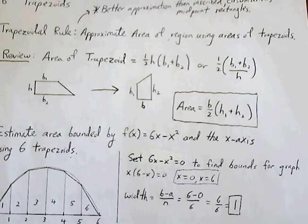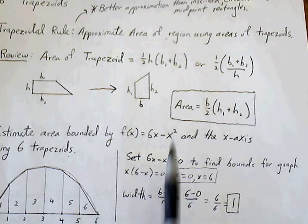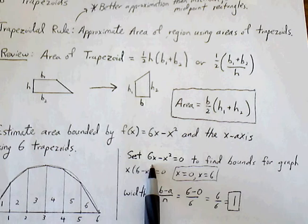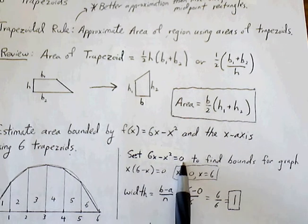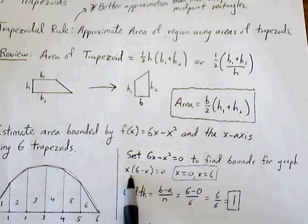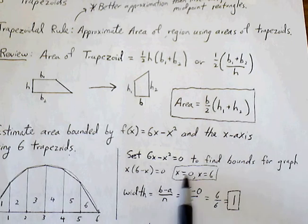So the first step, for example 1, is we need to find the bounds, since the bounds are not given to us. So we can find out when the graph is going to cross the x-axis by setting our function equal to 0. Factor out the x, we get 6 minus x, so set x equal to 0, we get 0. Set 6 minus x equal to 0, we get 6. So we have our bounds being 0 and 6.